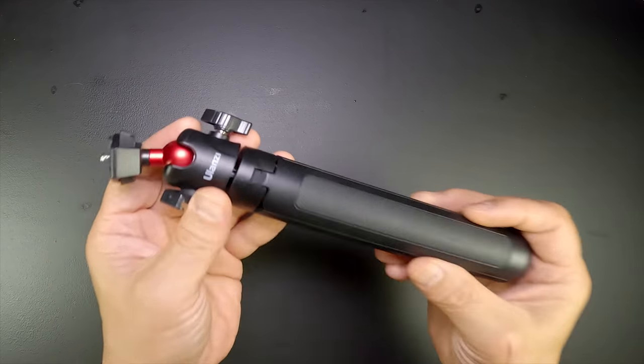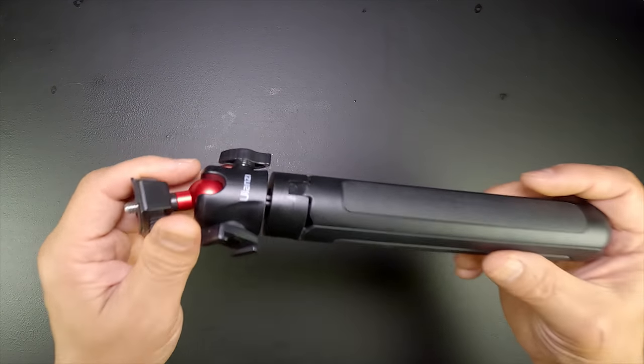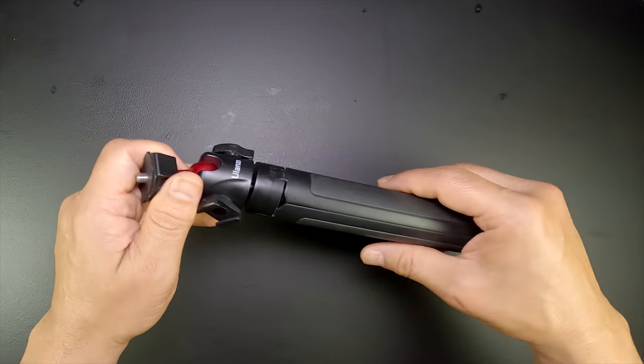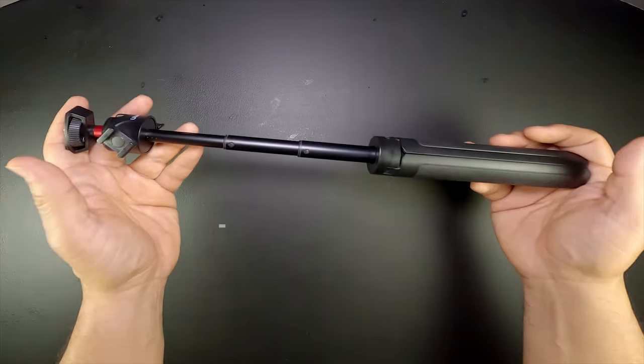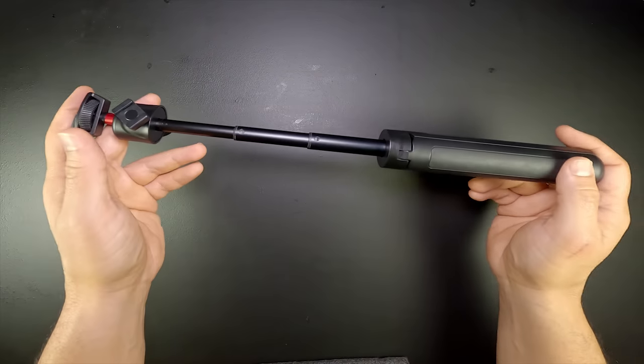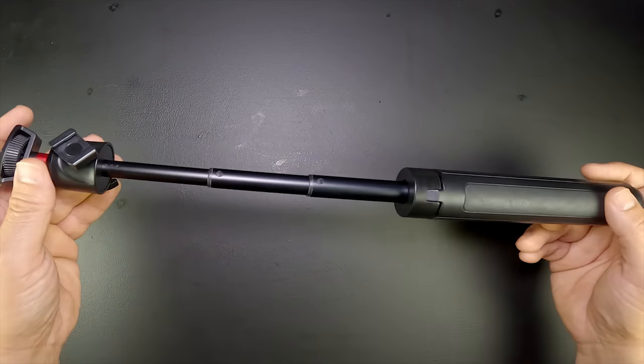This makes the mini tripod ideal for taking selfies or vlogs, since the range is on a close to medium shot because of its max extension of 44 centimeters. For that type of shot, it's practical. If it's too long, you get to see the tripod and it takes away from the illusion, or more like becomes a distraction.